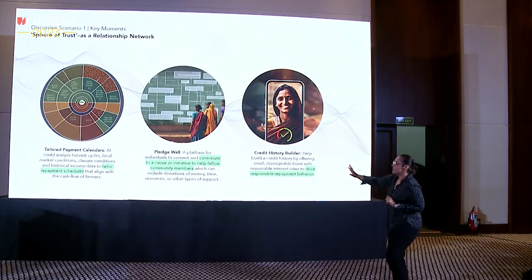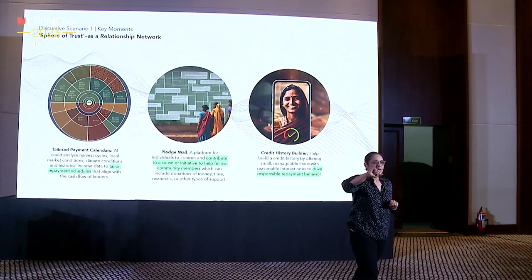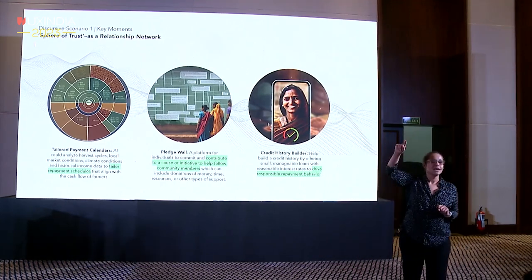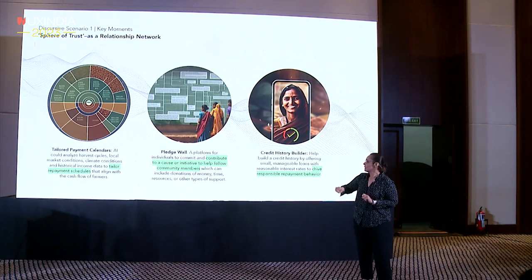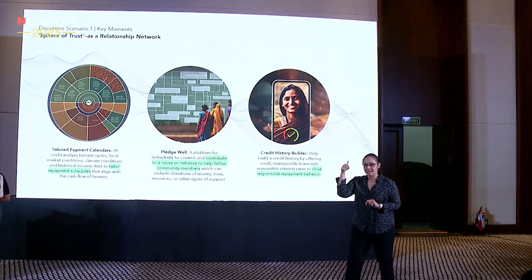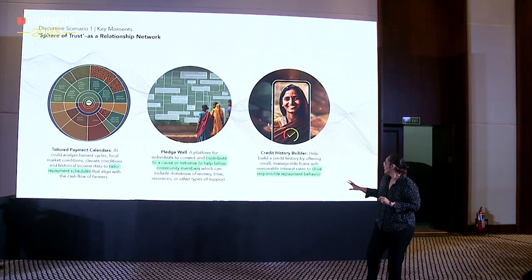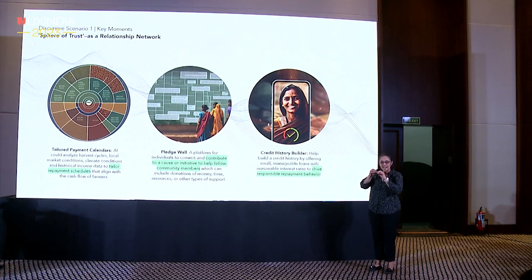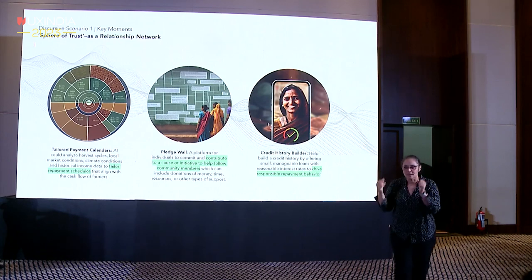There could be payment calendars — right now all interest payments are as per the bank's prerogative, but I'm saying it should be mapped to farmers' harvest cycles, when they can actually pay back. There are pledge walls where people can say, I vouch, I want to help the community. And credit history builders, so women entrepreneurs there can actually build their credit over time. All those interventions can be experimented with using these discursive principles.